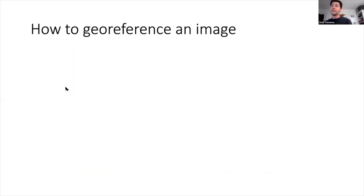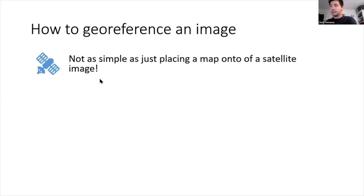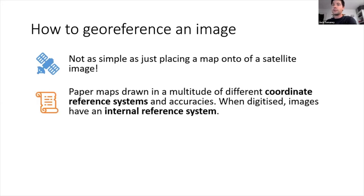I'm now going to talk about the technical aspects of how to georeference an image and some important terminology to understand when designing a methodology. In some cases, although it may look simple, it's not just a matter of placing the map on top of the satellite image — there's quite a lot of technical work involved. There are four main steps and decisions that need to be made during georeferencing, which I'll expand on in the following sections.